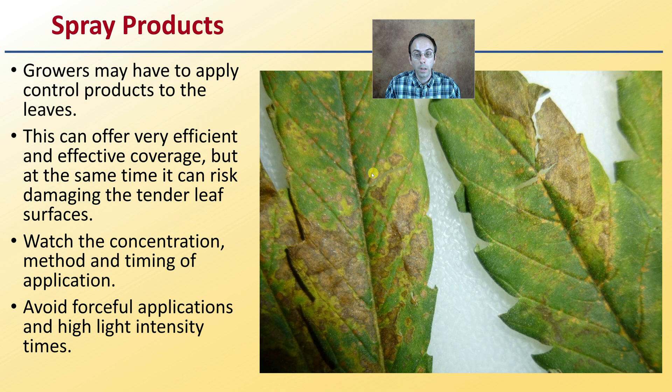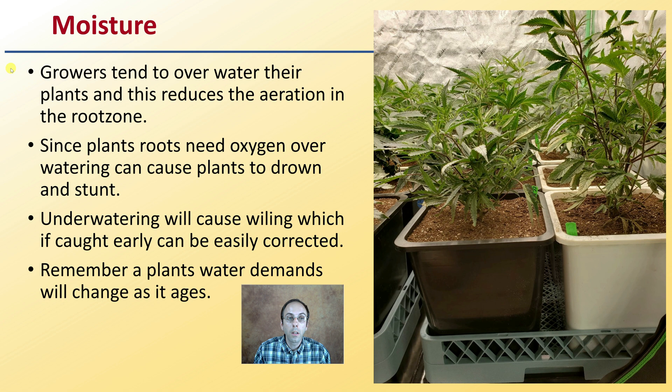Then we have moisture to consider. Growers tend to overwater their plants, which reduces aeration within the root zone. Since plants' roots need oxygen, overwatering can cause plants to drown and also cause stunting. Underwatering, though, can cause wilting, which if caught early can be corrected. Remember, a plant's water demands will change as it ages — as it gets older, more roots and a larger top structure mean the amount of irrigation required is going to be greater.